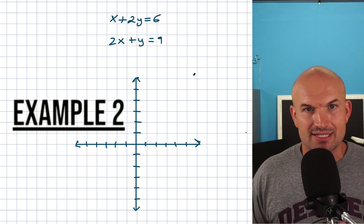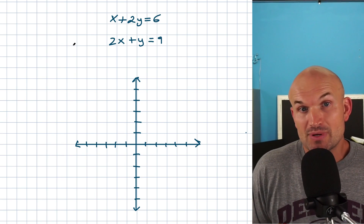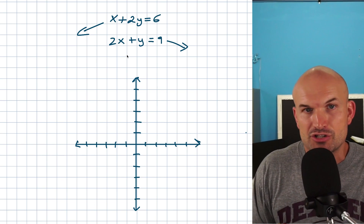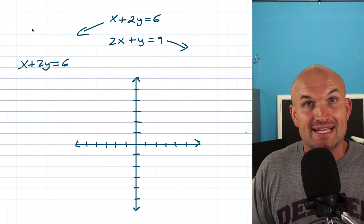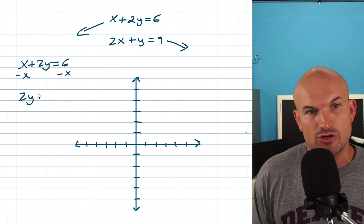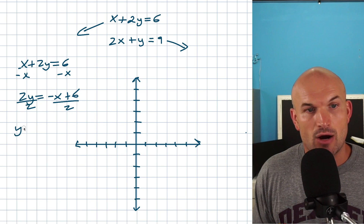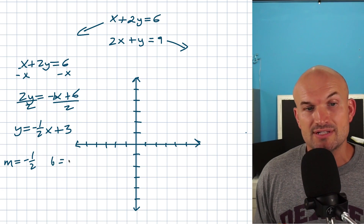In the second example we have two equations in standard form. A lot of students don't want to deal with these because it takes more work, but we just need to solve for y. Whenever you have a problem like this, work it out on the side or another sheet of paper. For the first equation, subtract x on both sides to get 2y equals negative x plus 6, then divide everything by 2. That gives y equals negative one-half x plus 3, so slope is negative one-half and y-intercept is 3.